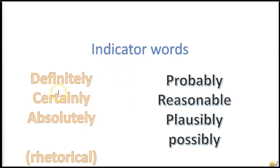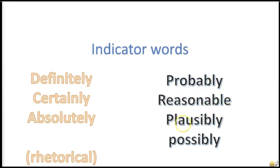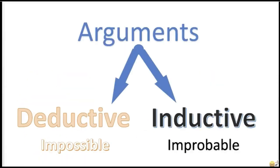Indicator words for deductive arguments include words like 'definitely,' 'it's certainly the case that,' and 'it's absolutely the case that.' In contrast, inductive argument indicators include 'it's probably true that,' 'it's reasonable to believe that,' 'it's plausible that such and such is the case,' or 'it's possible that such and such is the case.' You see — probabilistic reasoning versus necessary reasoning.